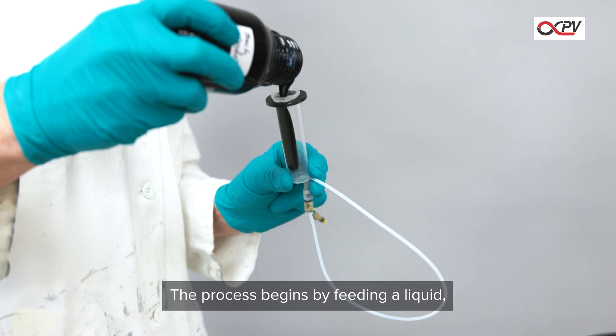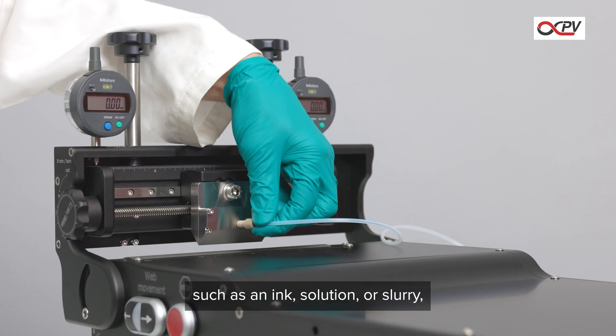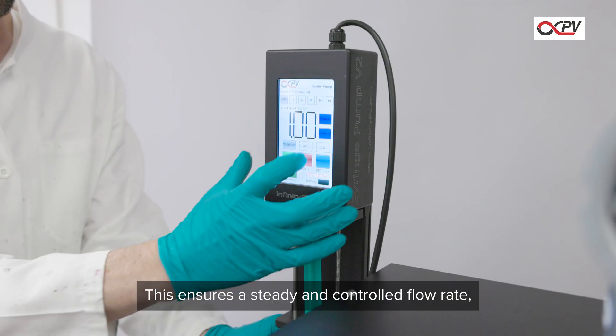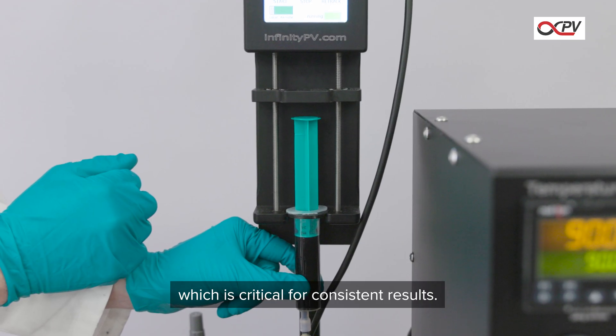The process begins by feeding a liquid, such as an ink, solution, or slurry, into a slot die head using a pump. This ensures a steady and controlled flow rate, which is critical for consistent results.